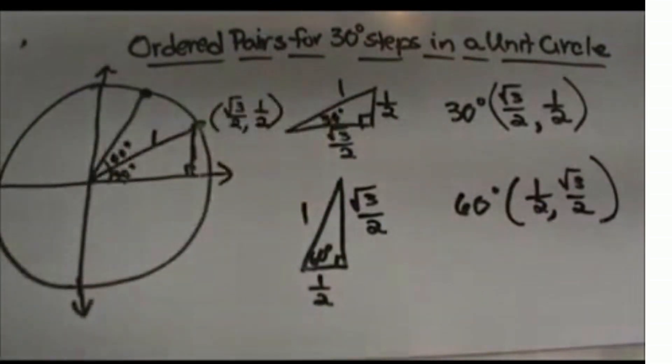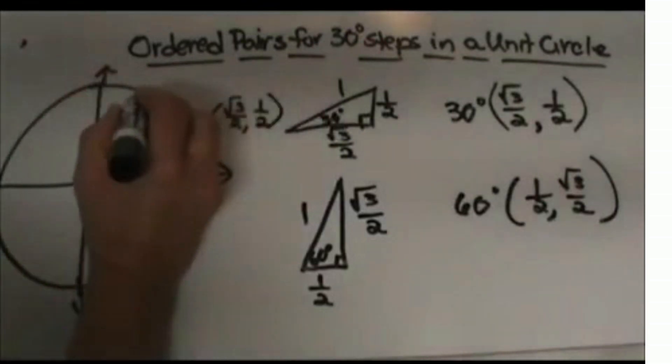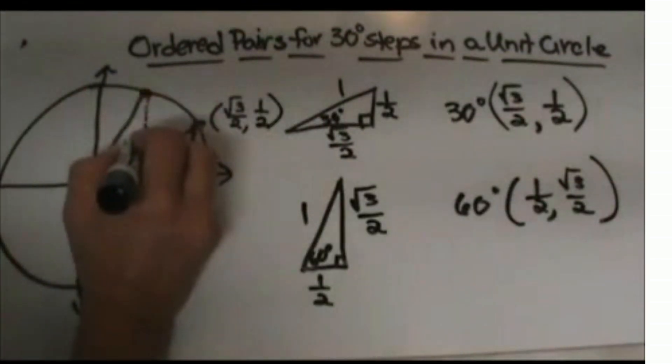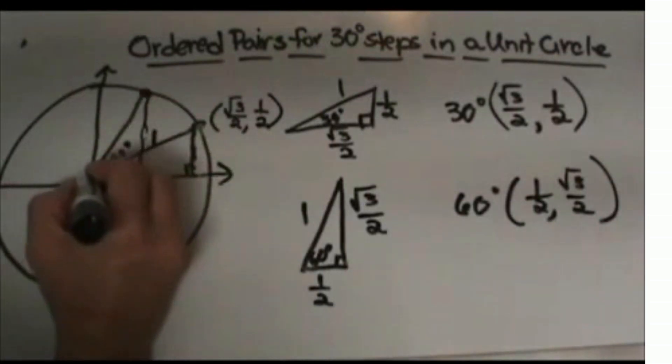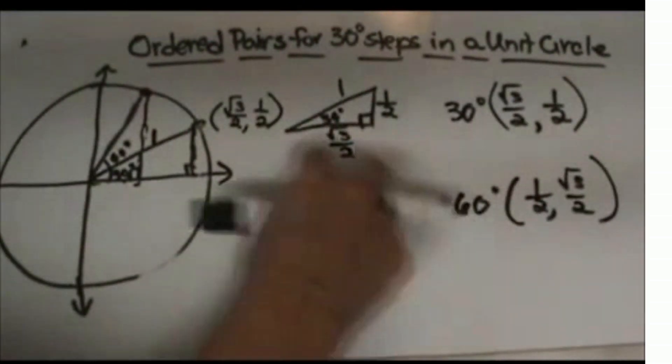What about the 60 degree angle? I've drawn in the 60 degree angle. I'm going to bring down and make a right triangle right here.